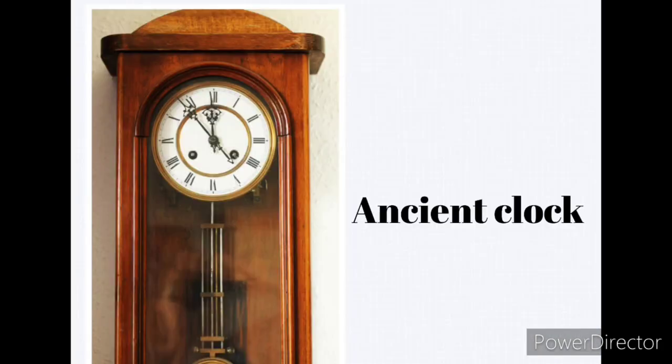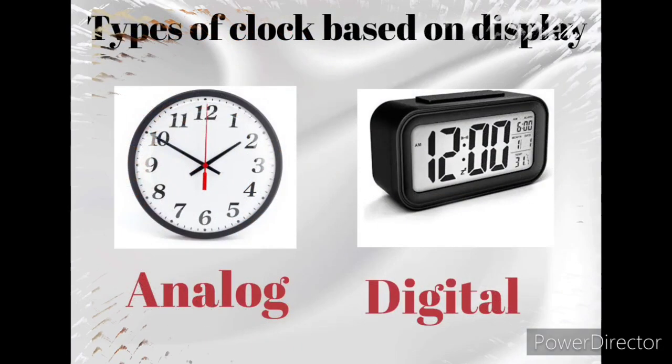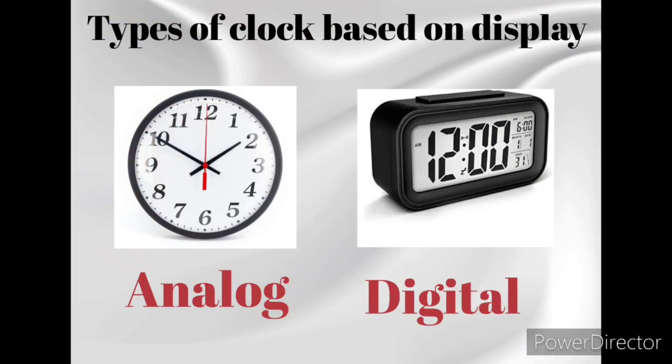from ancient times. Scientists modified the clock's mechanism to obtain accuracy. Types of clocks based on display: analog and digital.